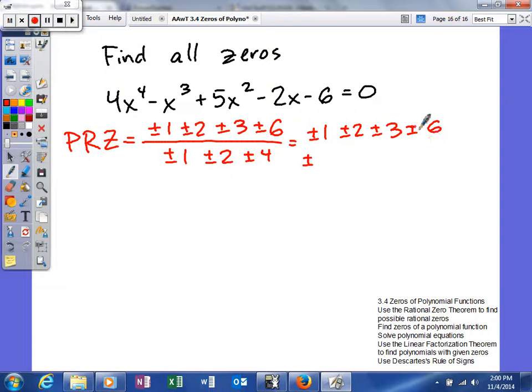Plus or minus 1 half. We already have 2 divided by 2, so plus or minus 3 halves. We already have 3, so plus or minus 1 fourth, 2 fourths is a half, 3 fourths, plus or minus 3 fourths. And then 6 fourths will simplify to 3 halves. So that's good.